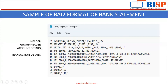In the third row these are the account details. This is the account number of the bank, and this is the code for opening balance. This is the opening balance amount. This is the code for closing balance. This is the closing balance amount of the bank statement, and this is the available balance.